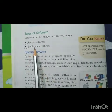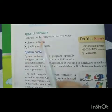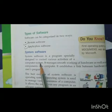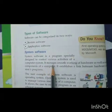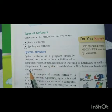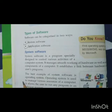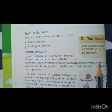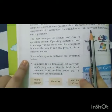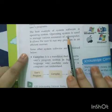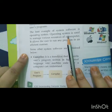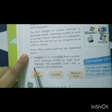Children, we studied that system software are special softwares which are designed to control the various activities of a computer. It manages the smooth working of hardware as well as software components. System software are of various types — the operating system is one of the best examples of system software. Next, we studied about the compiler, which translates high level languages into machine code — the machine language which a computer can easily understand.